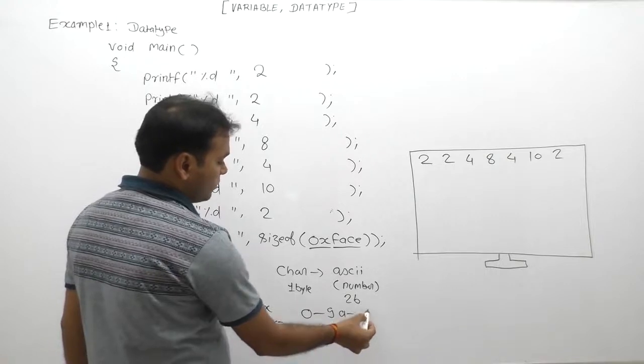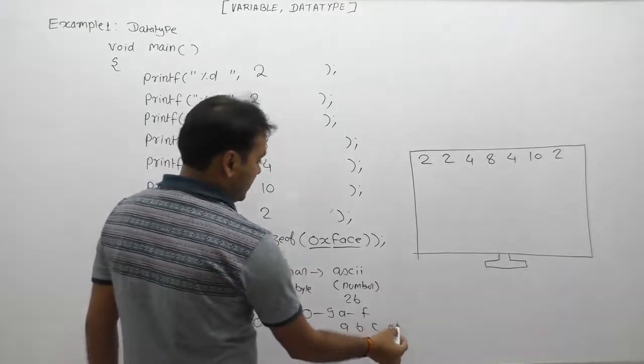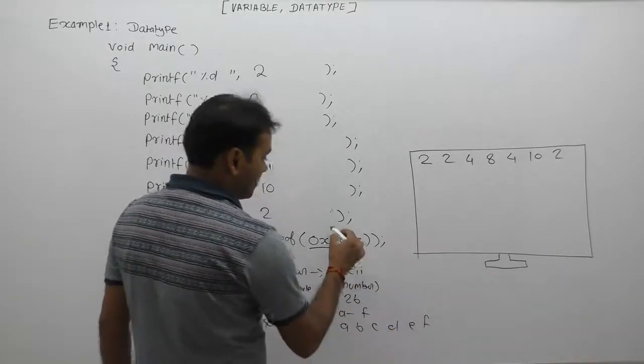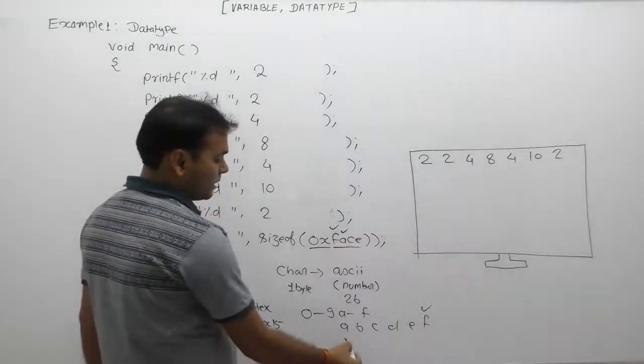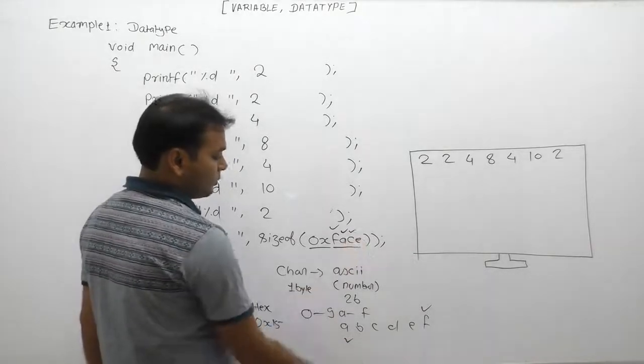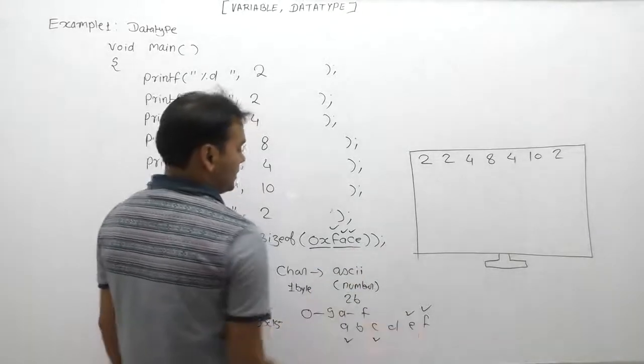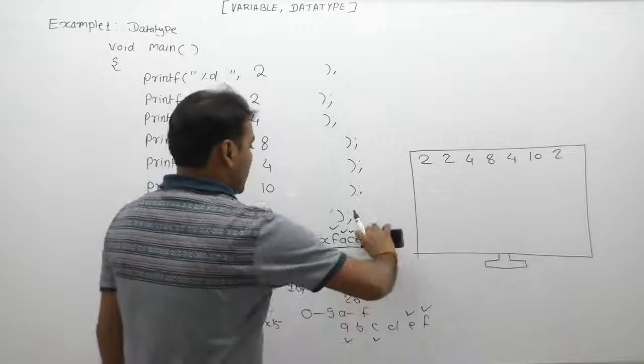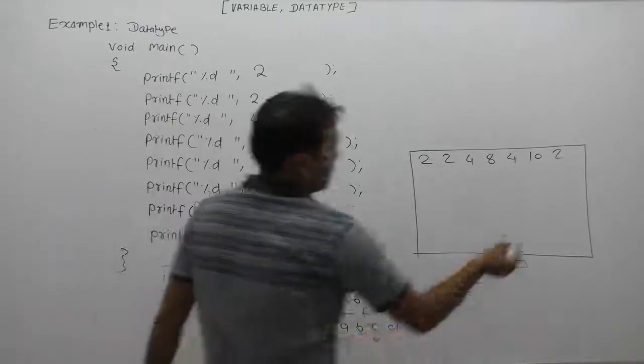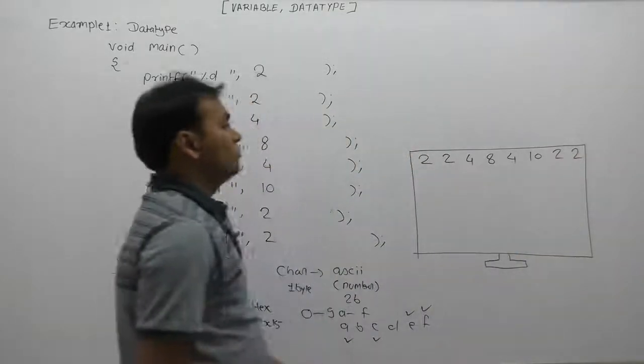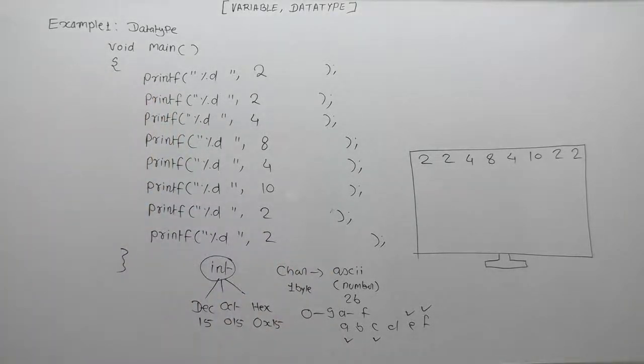First one: F—F is a valid digit for hexadecimal. Next: A—A is also a valid digit. Next: C—C is also valid. Finally, E—E is also a valid digit. Therefore, it is a valid hexadecimal integer literal. The size of integer takes again two bytes. The final output of that program is 2, 2, 4, 8, 4, 10, 2, 2.